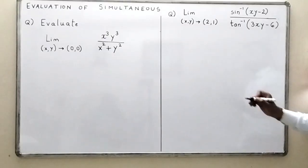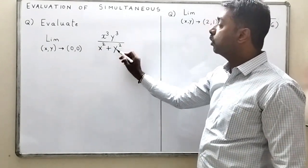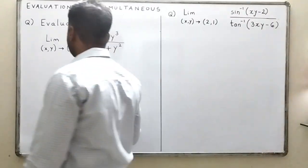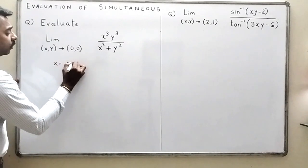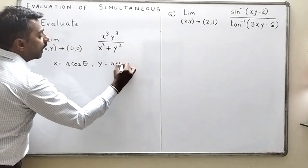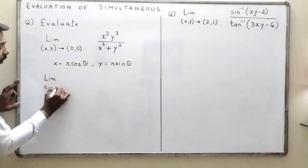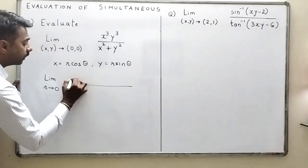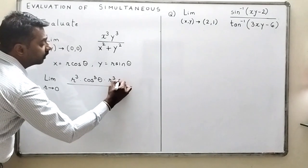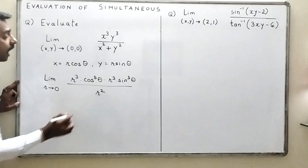Let us see one more problem: limit (x,y) → (0,0) of x³y³ / (x² + y²). We use the same trick: x = r cosθ, y = r sinθ, and r → 0. This limit becomes limit r → 0 of r³cos³θ · r³sin³θ divided by r²cos²θ + r²sin²θ, which equals r².